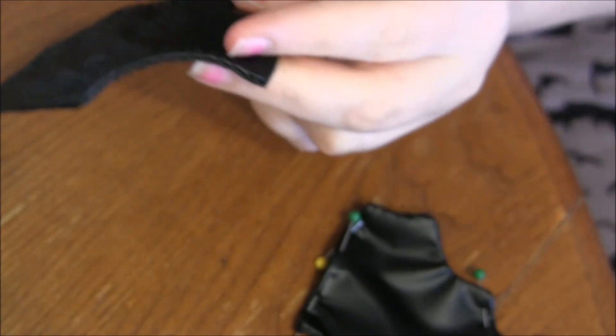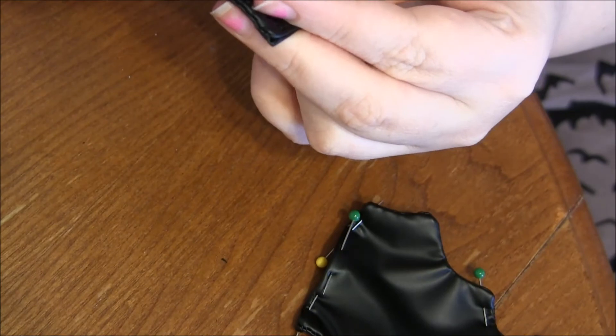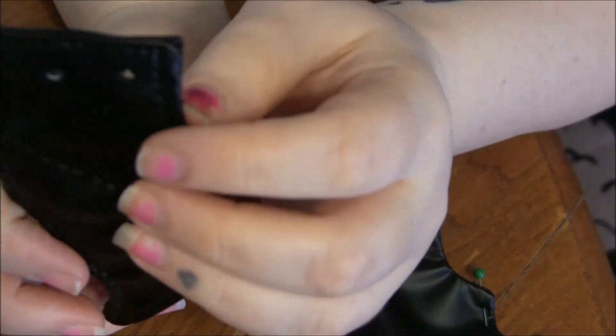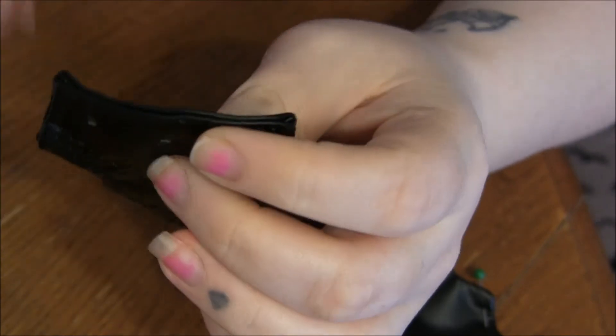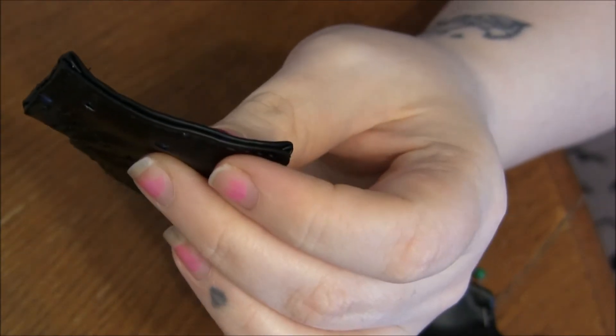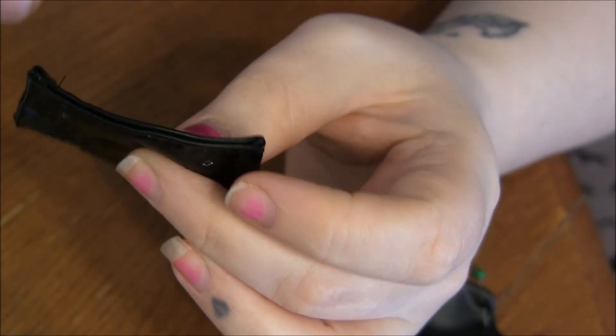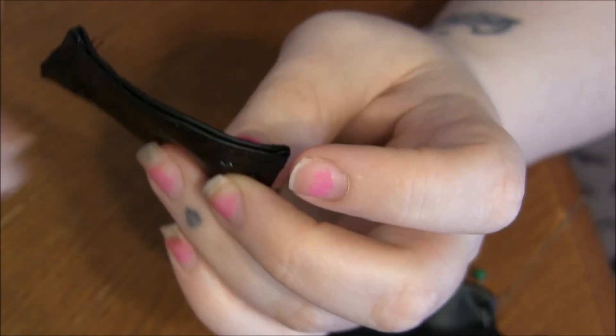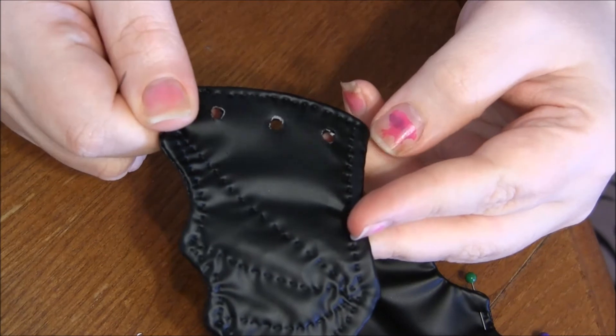You can do buttonholes by hand too. I do that because I don't have a button foot for my sewing machine. It's actually really simple and easy. If you don't know what a whip stitch is, you just simply insert the needle, put it through the hole instead of doing a regular thing - you whip it around.